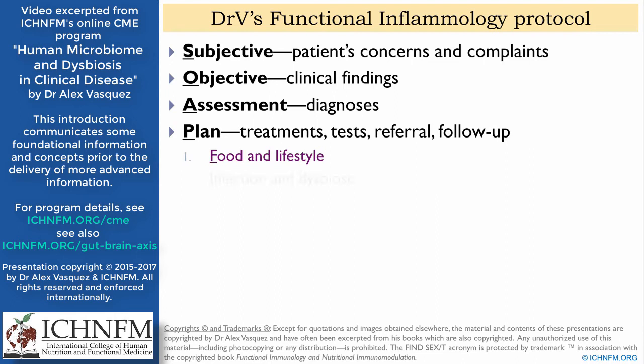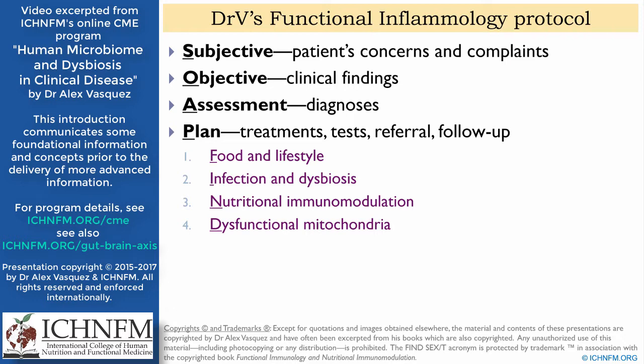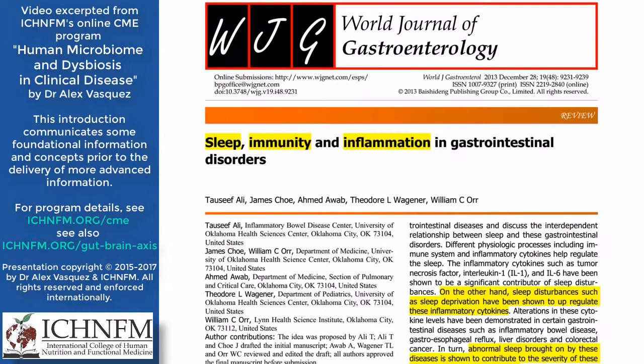Now we know that we need to focus on food and lifestyle, infections and microbial imbalances. We can intervene at the level of the immune system and promote balance — what I call nutritional immunomodulation — with the goal of optimizing the balance between T regulatory cells and TH17 cells. We can affect dysmetabolism and dysfunctional mitochondria through specific nutritional interventions. Items in the fifth component all start with the S sound, including stress, sociology, psychology, style of living or lifestyle, and sleep optimization — because when people are sleep deprived, they are in a pro-inflammatory state and simultaneously immune suppressed.